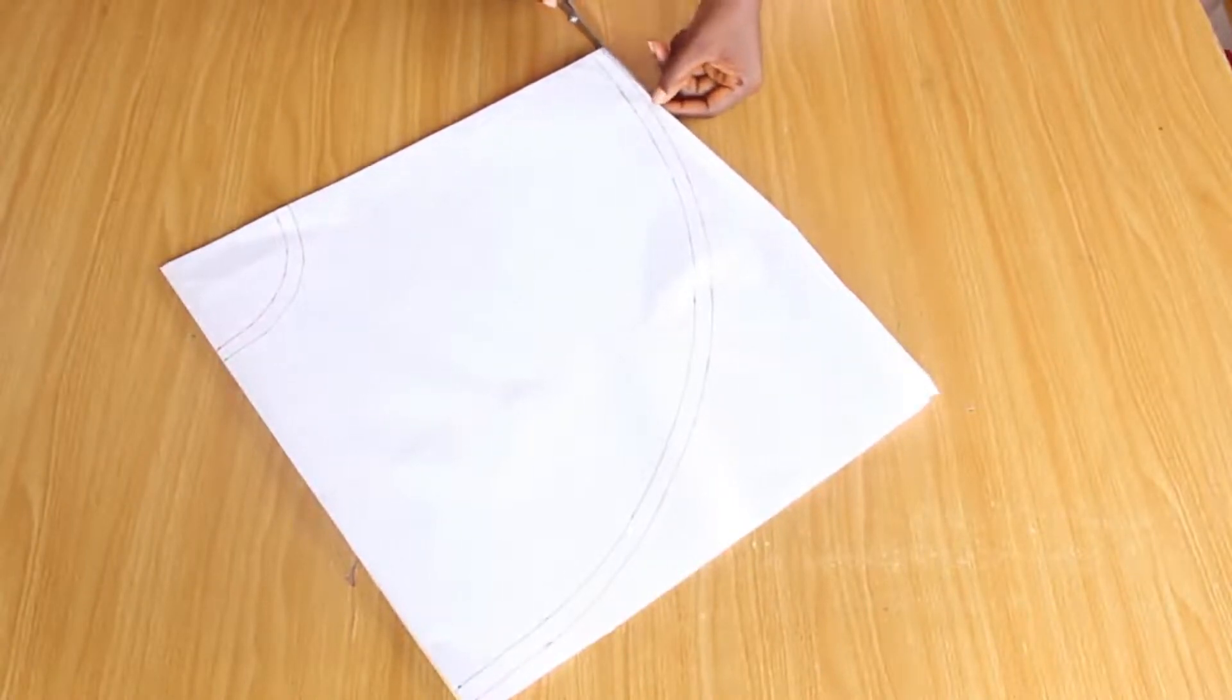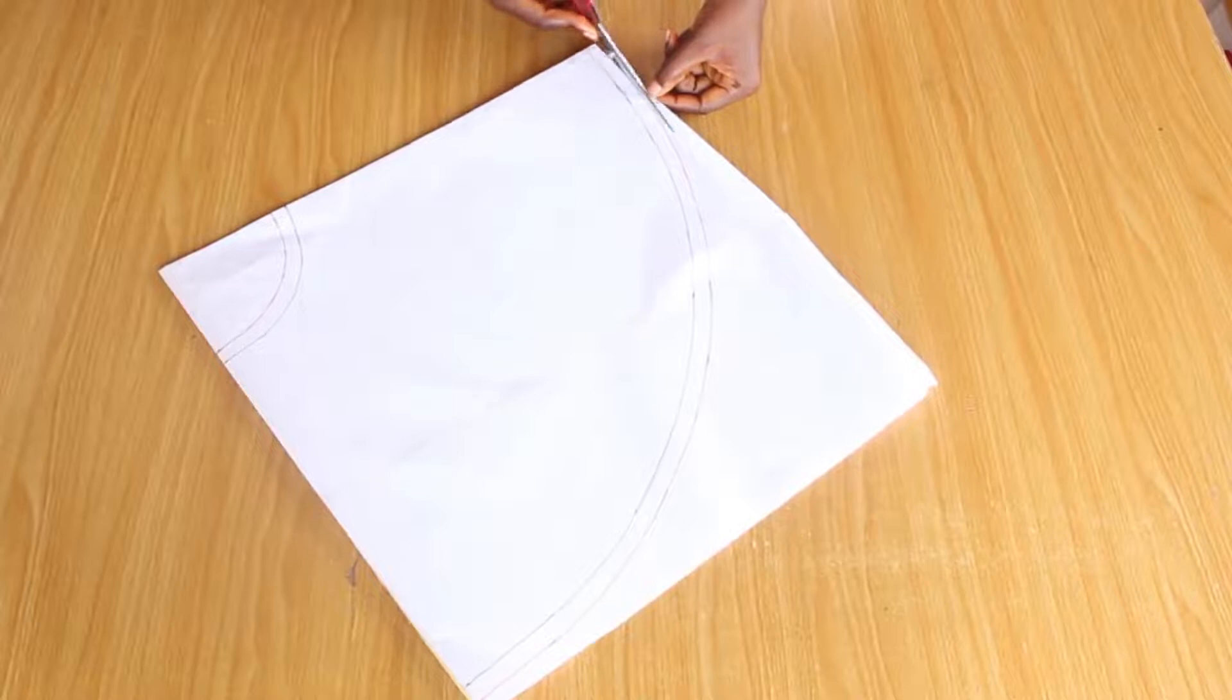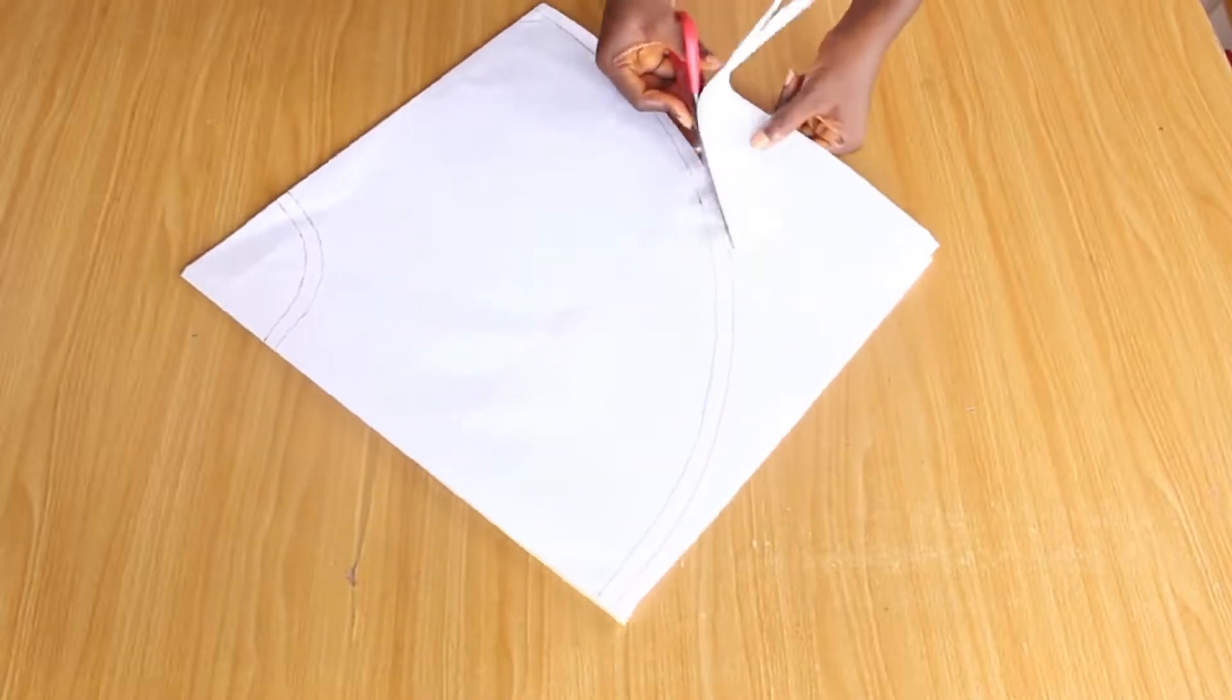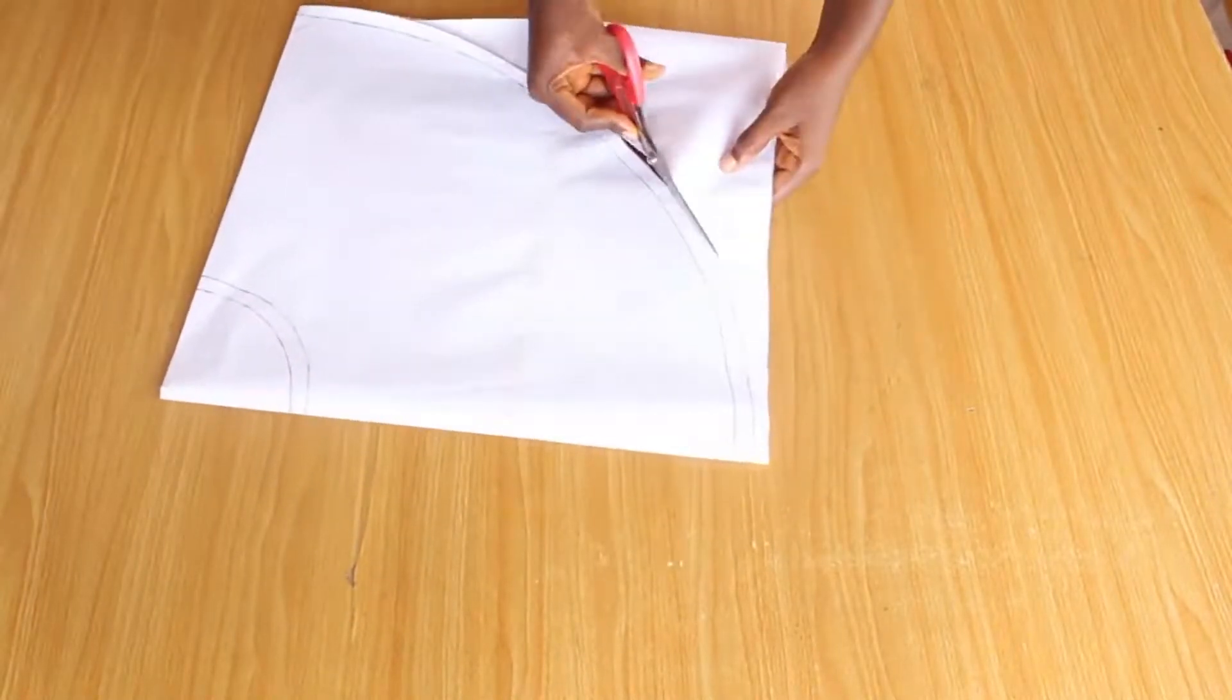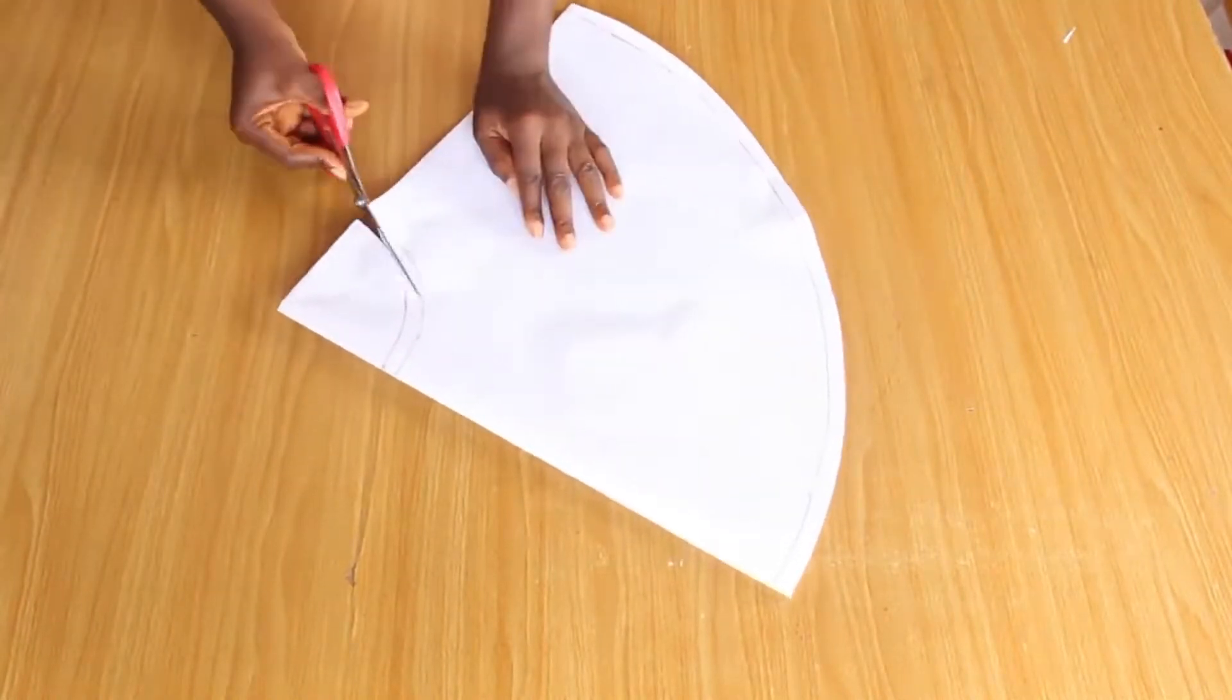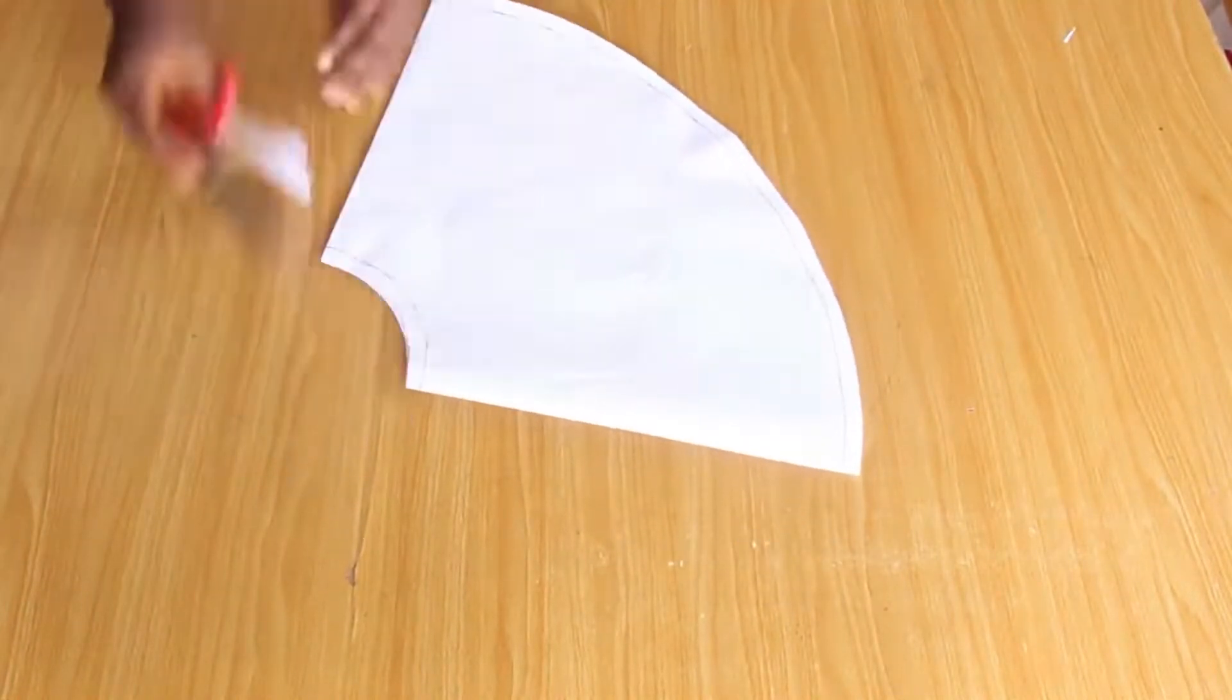I'm also going to come up here and add half inch allowance for the waist seam. It's time for us to cut out our pattern. I'm going to cut on the seam line. So this is our circle skirt pattern. This is exactly what you're going to have once you're done cutting your circle skirt.